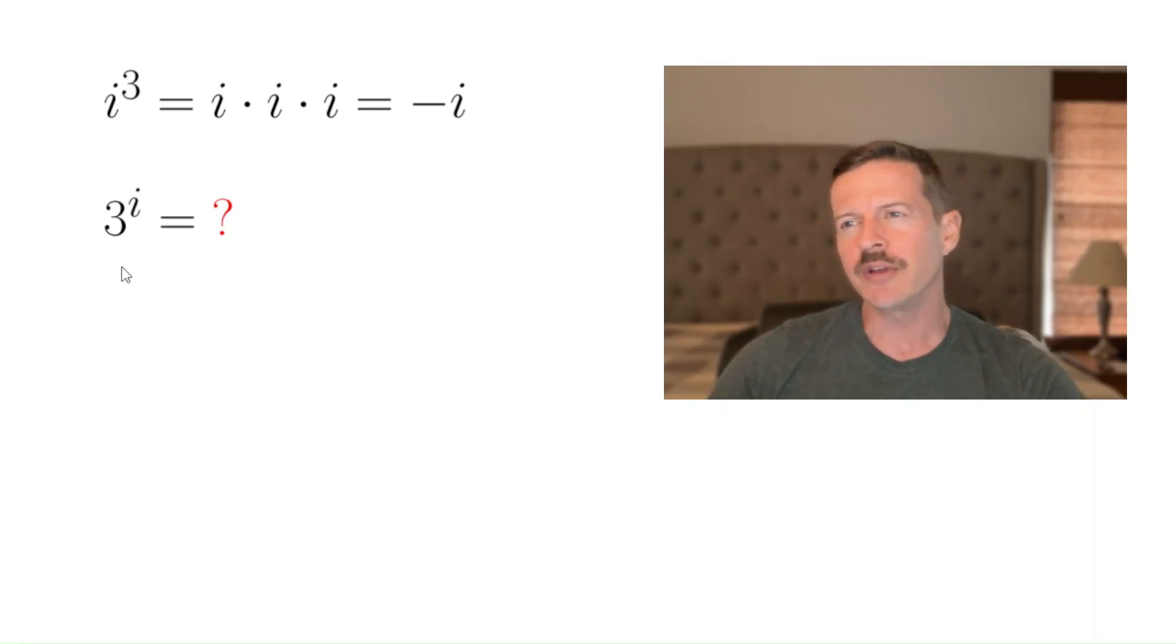But what about three to the i power? What does that even mean? Does that mean multiply three by itself a total of i number of times? Right, so how can we even make sense of three to the i power?